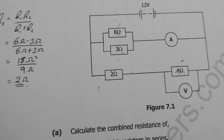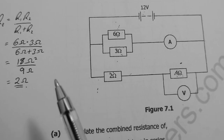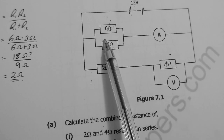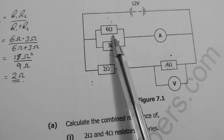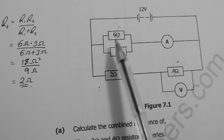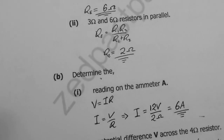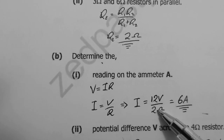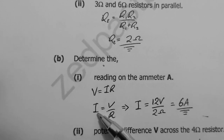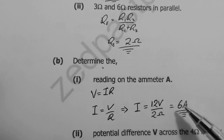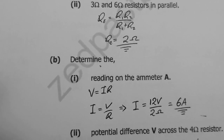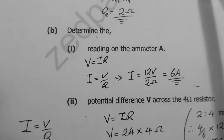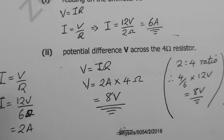Determine the reading on the ammeter. The effective resistance in the parallel branch is 2 Ω. In parallel circuits, voltage is the same across each branch — so 12 V is across this branch. Using V = IR: I = V / R = 12 / 2 = 6 Amperes. So the ammeter reads 6 Amperes.